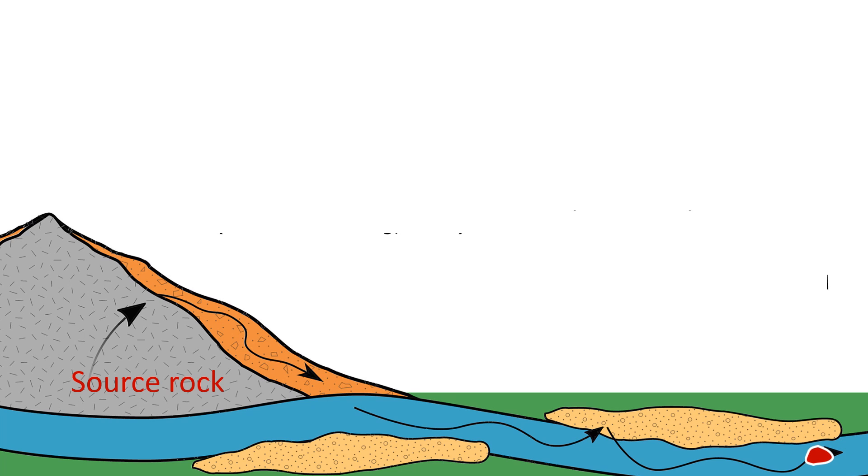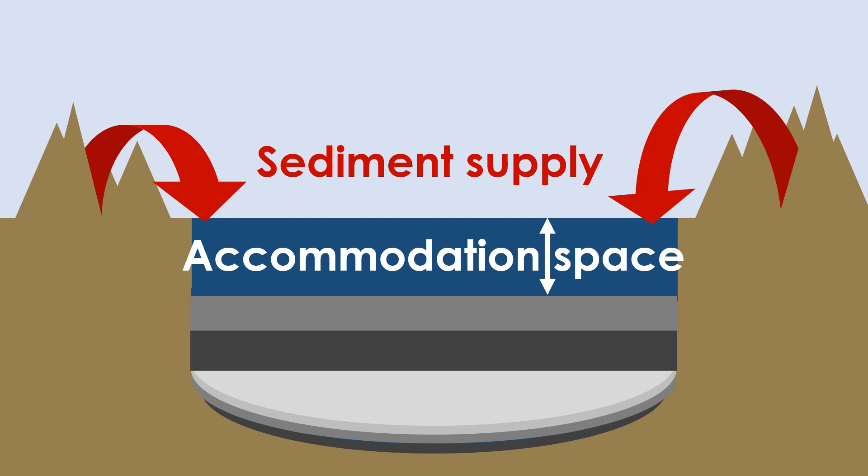Hopefully now, you're beginning to appreciate how we, as geologists, can look at a sedimentary rock or sediment sample and work backward. We can work backward to figure out the type of basin a rock comes from and the tectonic setting that produced it.